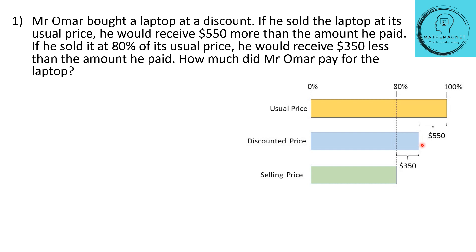The next statement says: if he sold it at 80% of the usual price, he would receive $350 less than the amount he paid — meaning he's selling at a loss. So if 80% is the selling price, the remaining 20% equals 100% − 80%. This entire 20% will be equal to 350 + 550.